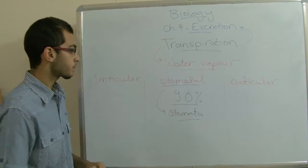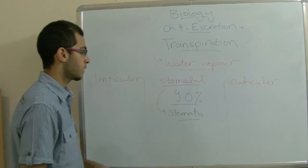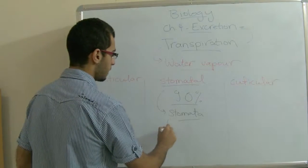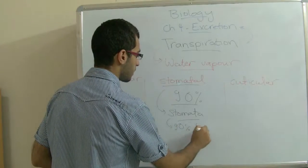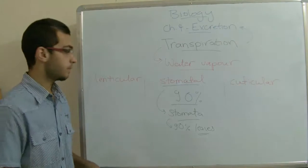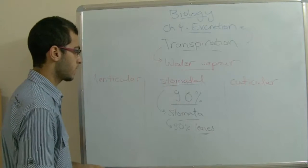So green stems may also participate in the process of transpiration. And since stomata are found with about 90% in the leaves, the leaves are the main organs which carry out the process of transpiration.